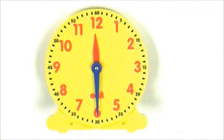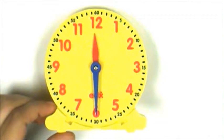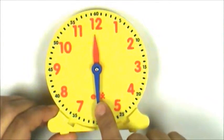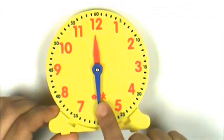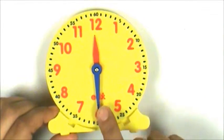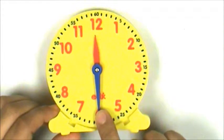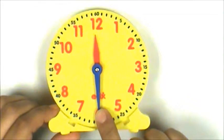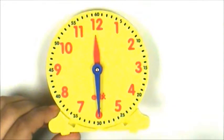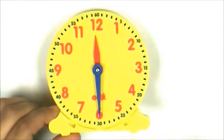First, I'm going to represent 4 o'clock. 4 o'clock means there are 4 hours and 0 minutes. This is my minute hand and I'm going to move it to the 12 because that's what represents 0 minutes.